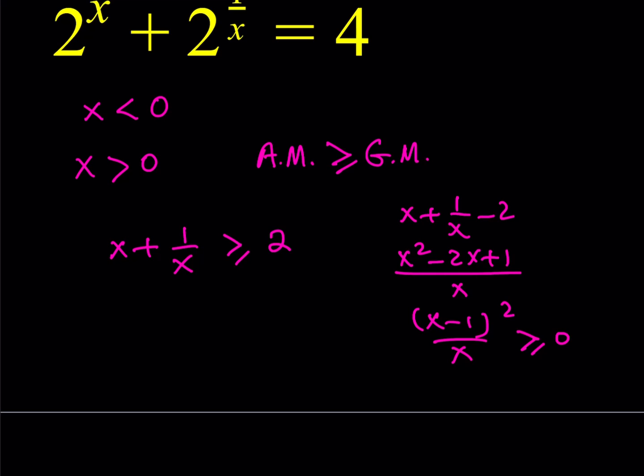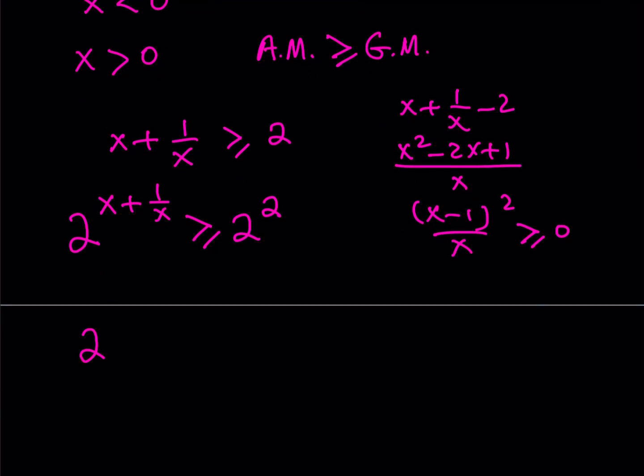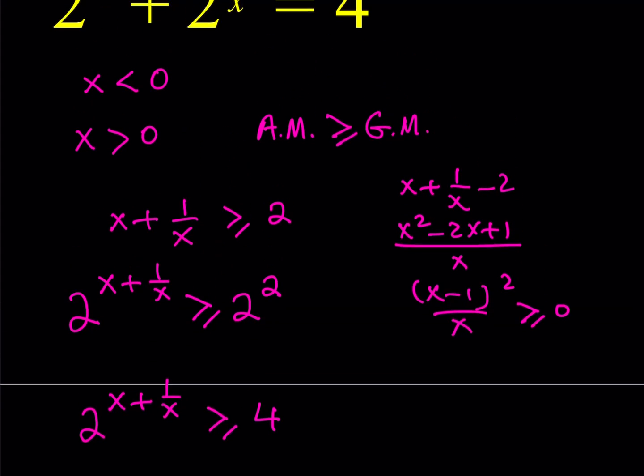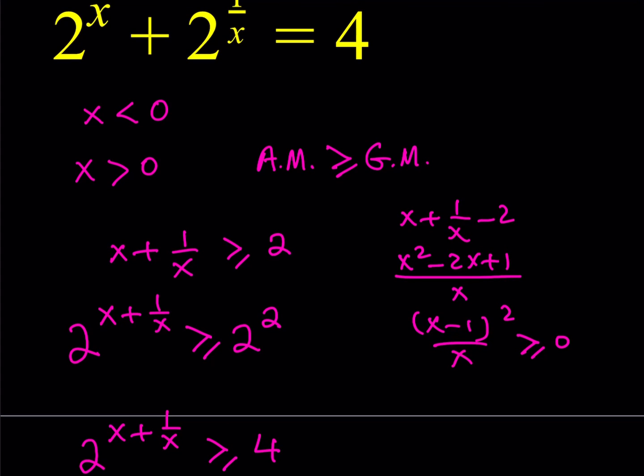Since x plus 1 over x is greater or equal to 2, I can basically say that in my expression, if I just raise 2 to the power of that, I'm going to be getting something like 2 to the power of x plus 1 over x is greater than or equal to 2 to the power of 2, which is equal to 4. So this basically tells me that 2 to the power of x plus 1 over x is going to be greater than or equal to 4 all the time if x is positive. Cool. Now, what does this have to do with our expression? Our expression involves the sum of two terms and that happens to equal 4. Isn't that interesting?